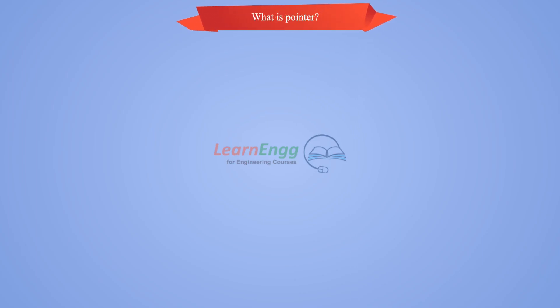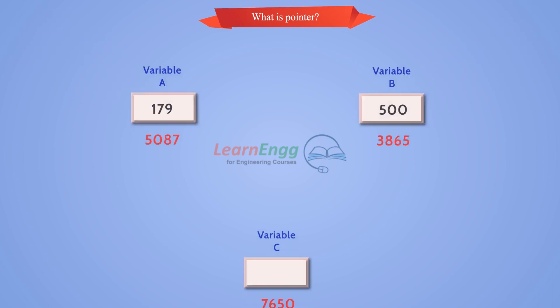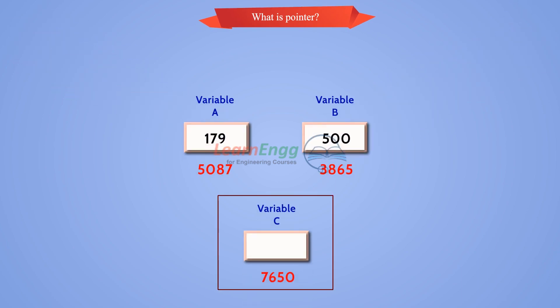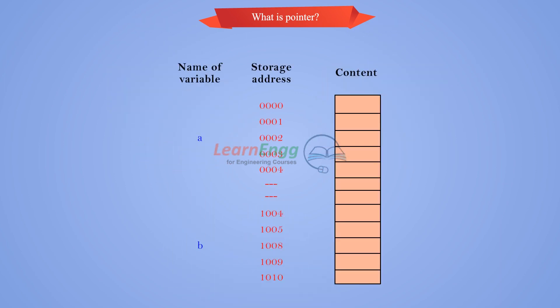What is pointer? A pointer is a variable that stores the address of another variable. Pointer A pointing to the memory address associated with variable B.